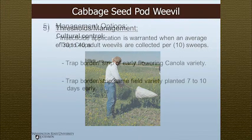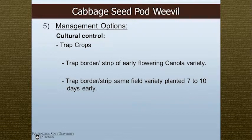Culturally, you can use a trap crop. Basically, we're trying to trap the insects into an area that we can treat. You could use a trap border or strips in your canola field of an earlier-flowering variety — something that's going to emerge early. The insects are attracted to that, and instead of spraying the whole field with insecticide, you can just target where the insects are. If you don't want to mix varieties, plant your variety seven to ten days early so it blooms first — same concept. Spray the perimeter or spray strips.